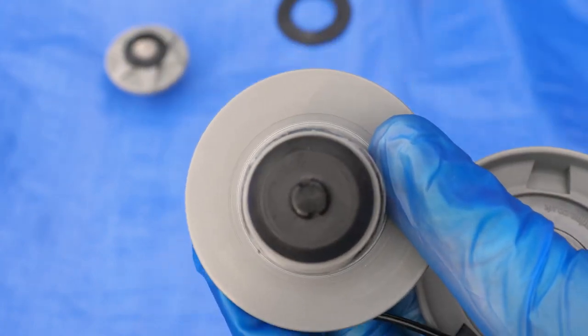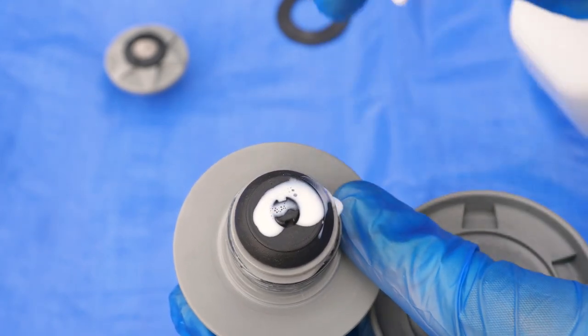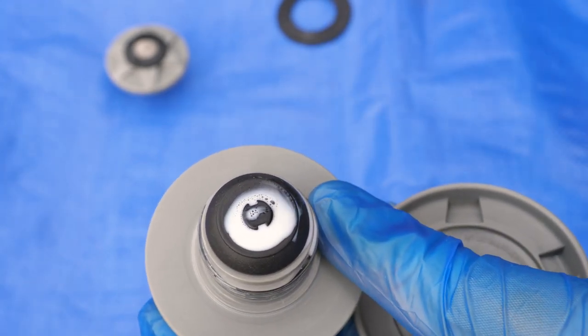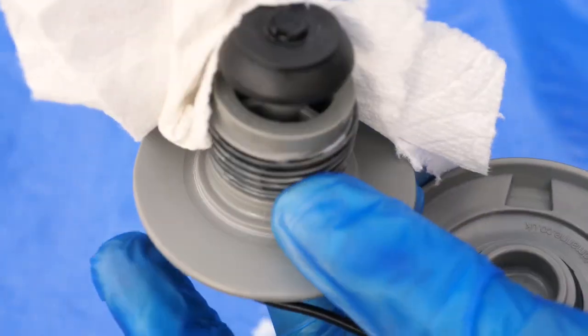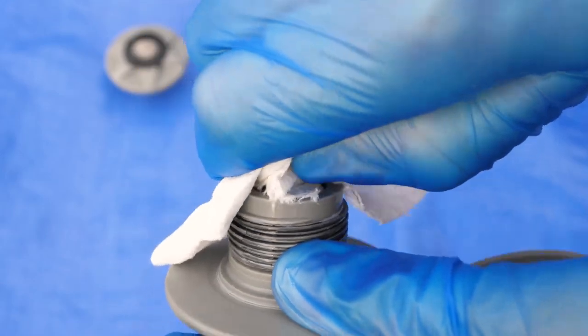So what we're going to do again take some 303. We're going to squirt some 303 on there. Now you can take a paper towel and kind of rub that in to the boot so that the whole boot becomes lubricated.